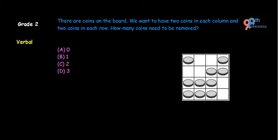There are coins on the board. We want to have 2 coins in each column and 2 coins in each row. How many coins need to be removed?